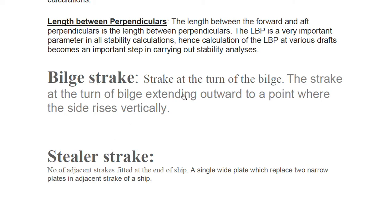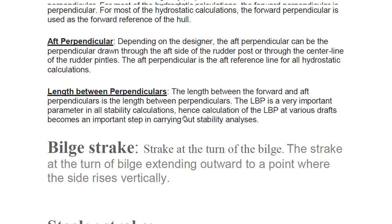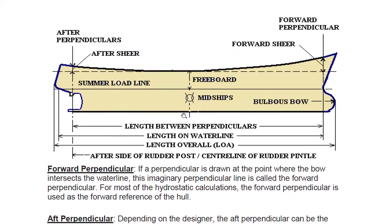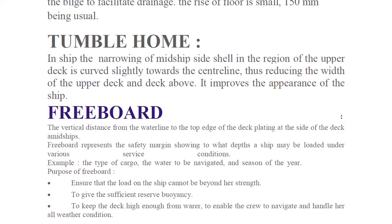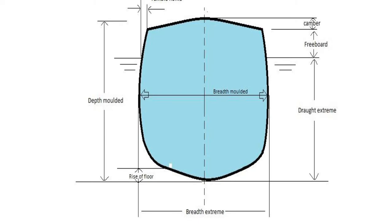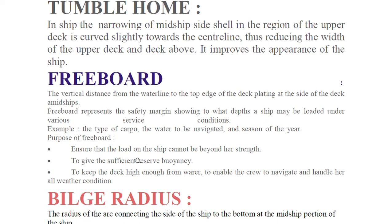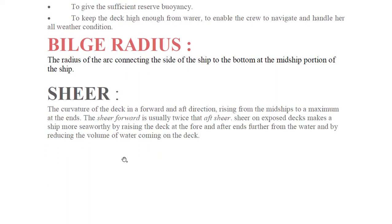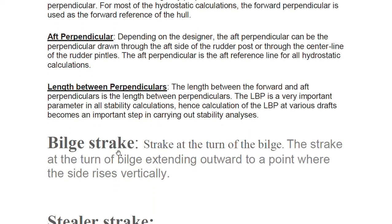The bilge strake is the strake at the turn of the bilge, extending outward to the point where the side rises vertically. Types of strakes include garboard strakes and shear strakes. The stringer strake is a number of adjacent strakes fitted at the end of the ship — a single wide plate which replaces two narrow plates in adjacent strakes.